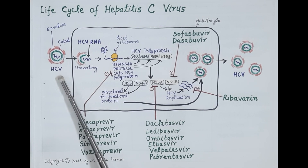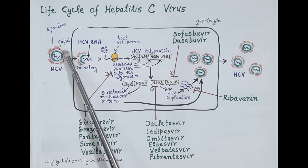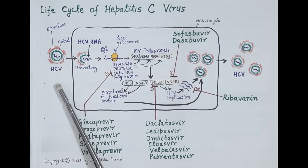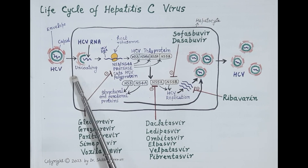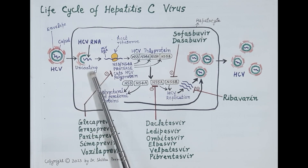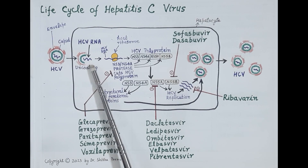The viral RNA is enclosed in a capsid, and the capsid is in turn covered by an envelope. Hepatitis C virus attaches itself to the hepatocyte — it binds to the receptors present on the surface of the hepatocyte — and thus the virus enters the cell by endocytosis. The virus then sheds its capsid and envelope and gets uncoated, and a single-stranded viral RNA is released in the host cytoplasm.